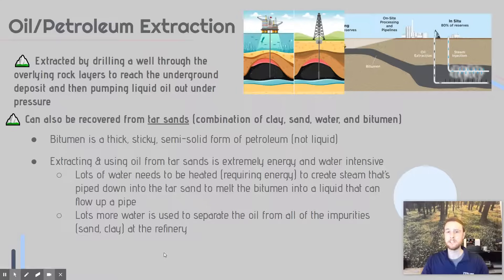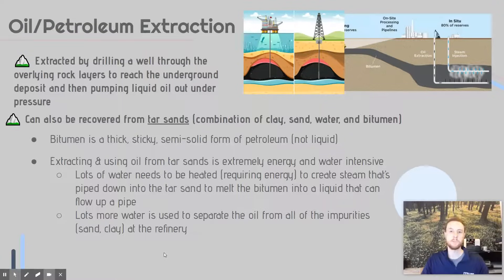To extract tar sands petroleum, we have to use a lot of water and steam, piped into the ground to get that oil to flow out in liquid form. That bitumen is then extracted, taken to a refinery, and separated into the petroleum and the impurities, and then it can be used just like any other petroleum source.